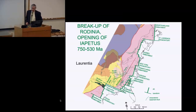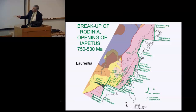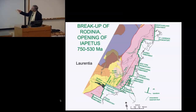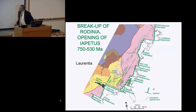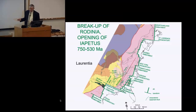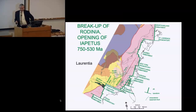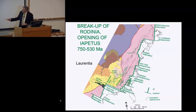Now let's turn to the next phase: the breakup of Rodinia and the opening of Iapetus — again a succession of events spanning from about 750 to 530 Ma. The green lines, color-coded for all Iapetan rifting events, show a zigzag outline of the continental crust. The piece of continental crust isolated by the breakup of Rodinia we'll call Laurentia — the predecessor to present North America, one cycle earlier.